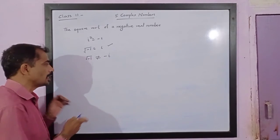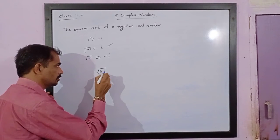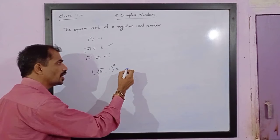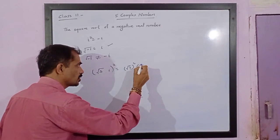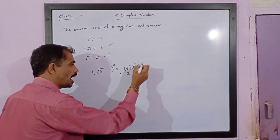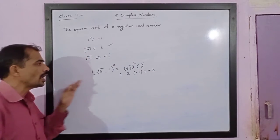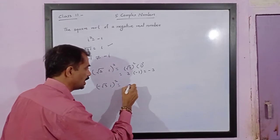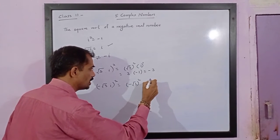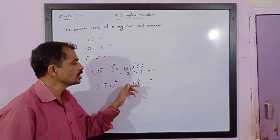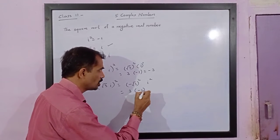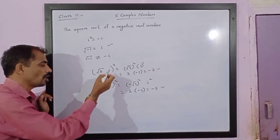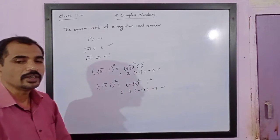Let us consider another point: root 3 times i, where i is outside the root. If you square this, you get root 3 squared times i squared, so that is 3 times negative 1, which equals negative 3. Now, if the value is negative, consider minus root 3 times i, squared: that is negative root 3 squared times i squared, which is positive 3 times negative 1, also equal to negative 3. So both root 3·i and minus root 3·i, when squared, give negative 3.